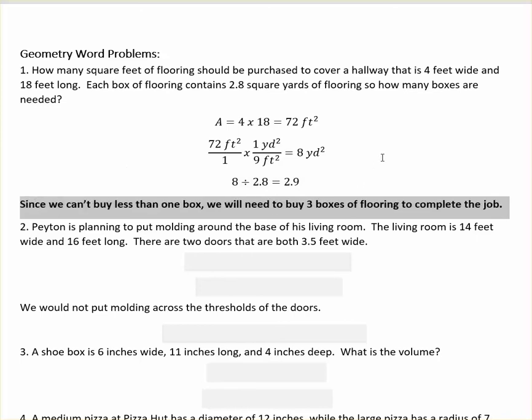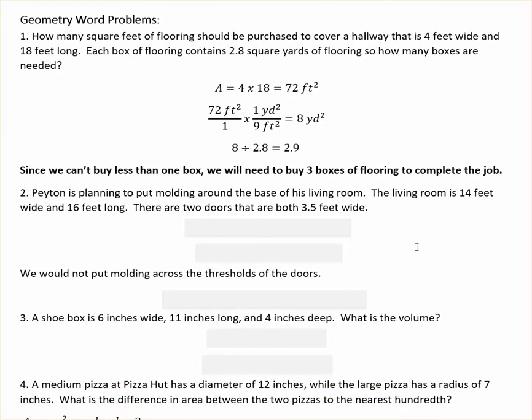In the second problem, Peyton is planning to put molding around the base of his living room. The living room is 14 feet wide and 16 feet long, and there are two doors that are both 3.5 feet wide. When we're talking about putting molding around a room, it's like a trim at the bottom. So it's not an area problem, it has to do with linear feet. We're just going to add up all four sides: 14, 16, 14, 16, which is 60 feet.